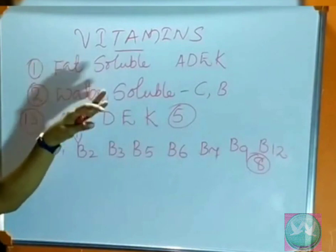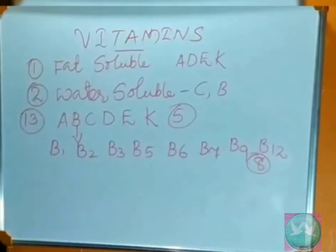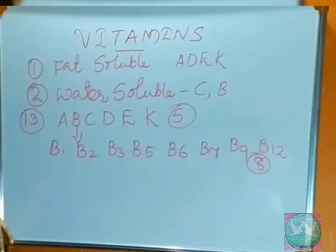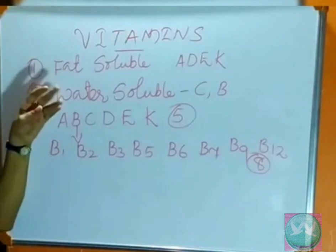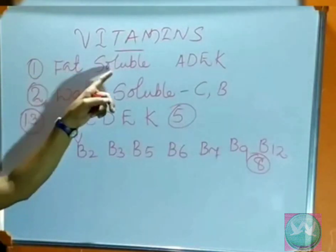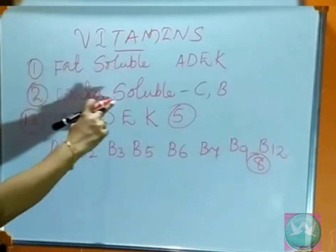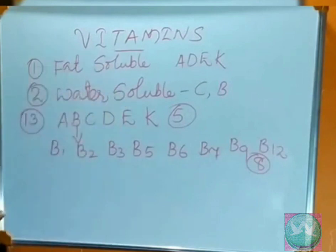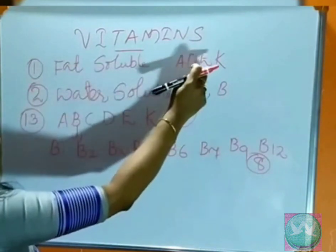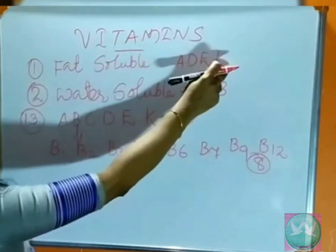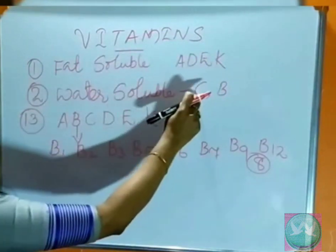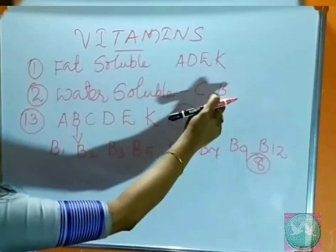Vitamins — total how many are there? 13 are there. And on the basis of solubility we can classify them into 2: the first one is fat soluble and the second one is water soluble. The fat soluble vitamins are A, D, E, and K. Water soluble vitamins are vitamin C and B.